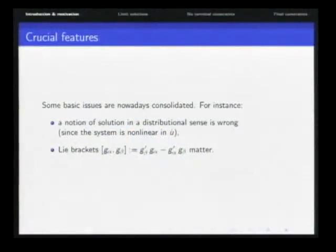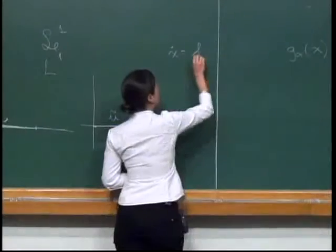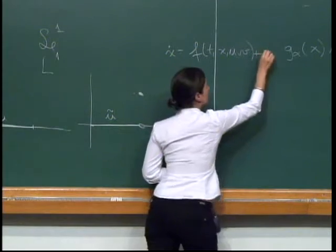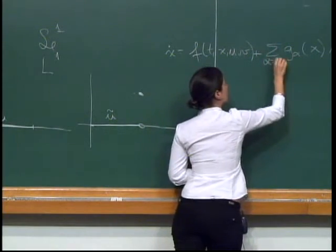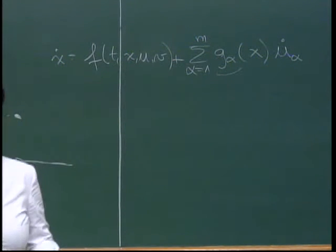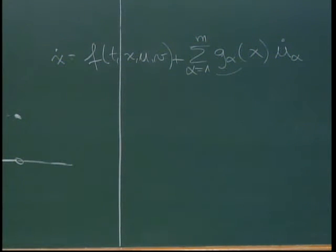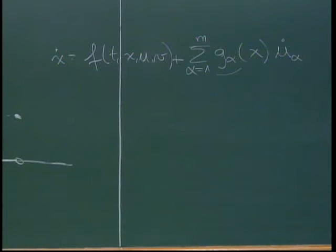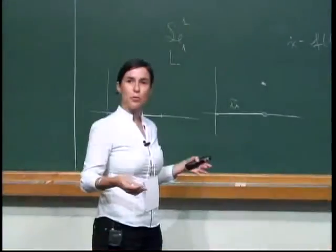The other important thing is that the Lie brackets of the vector fields are important. We have the system x-dot equal to f(t, x, u, v) plus the sum of m vector fields x-alpha that determine the impulsive part. The Lie brackets determine whether this system of equations has one or multiple solutions — uniqueness depends on the Lie brackets.